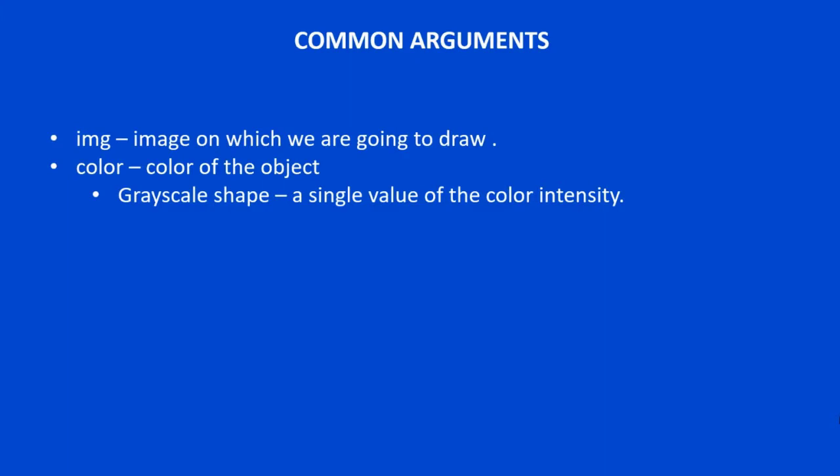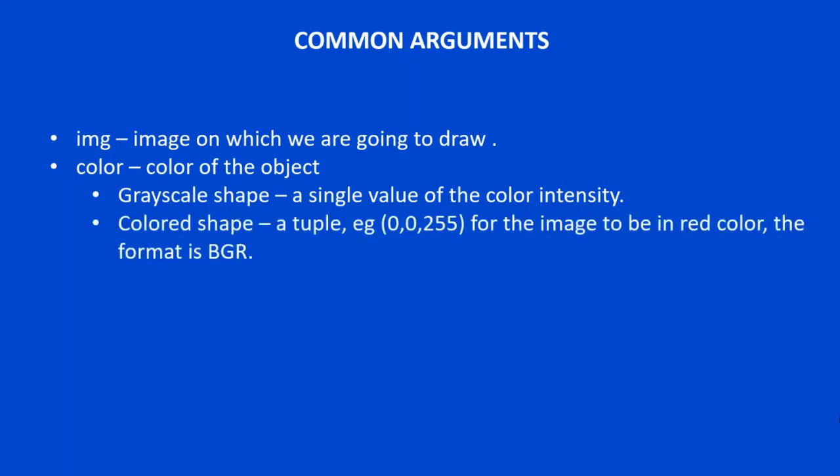For grayscale, you pass in a single value specifying the color intensity — a value between 0 and 255. 0 means you are drawing a black colored line or rectangle; 255 means white; and any value in between draws in a gray shade. If you want to draw a colored line or rectangle, you pass in a tuple. The color should be in BGR format — that is blue, green, and red.